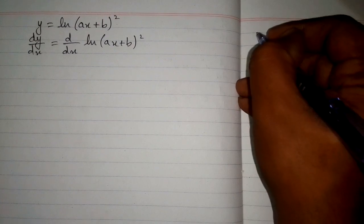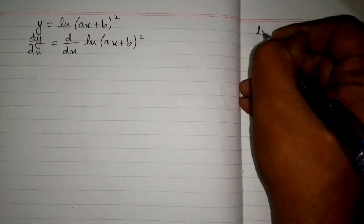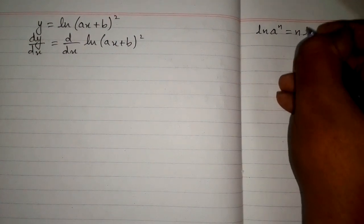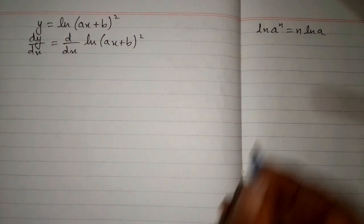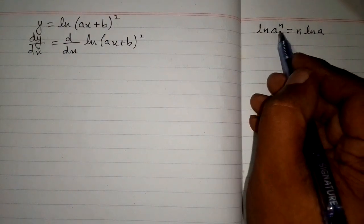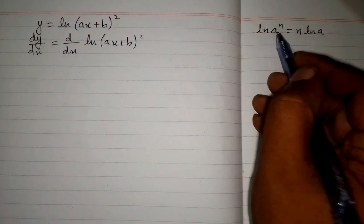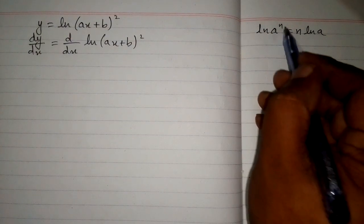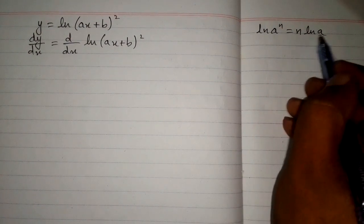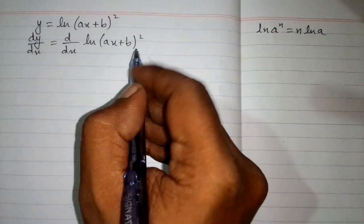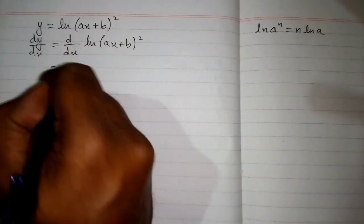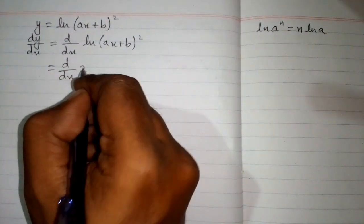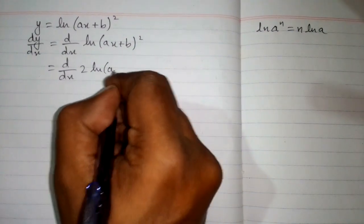We know that ln of a to the power n equals n times ln of a. This is the power rule of the log, so the power n becomes the coefficient of ln of a. Here, the power 2 will become the coefficient of ln(ax+b).